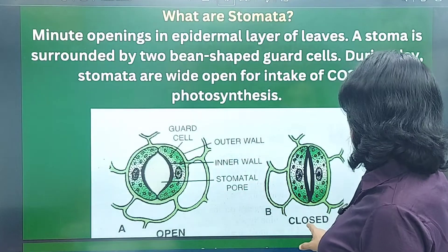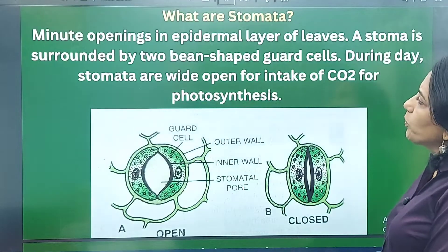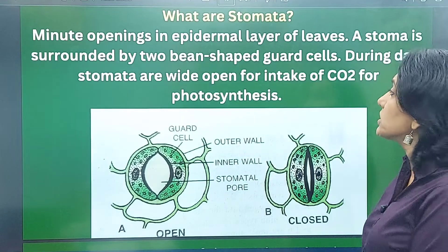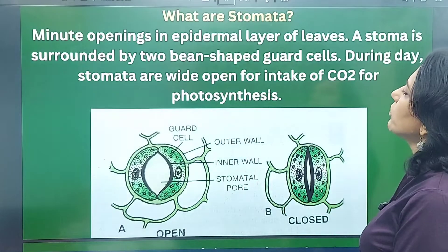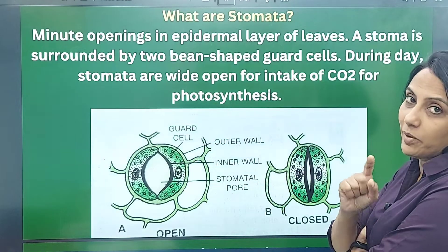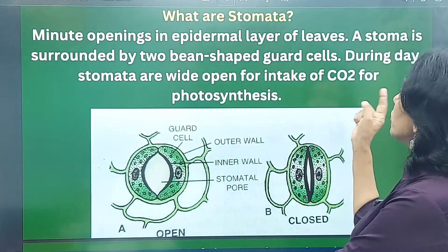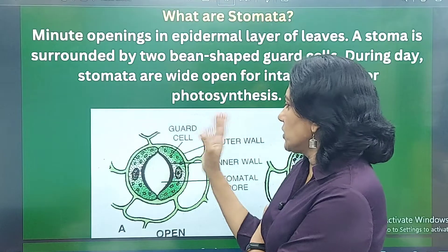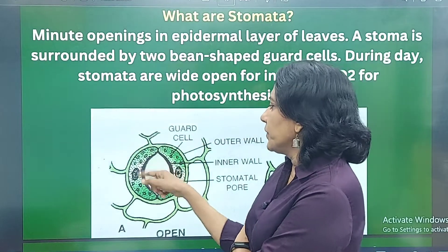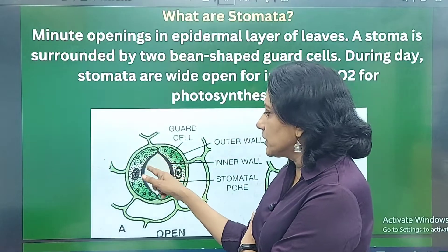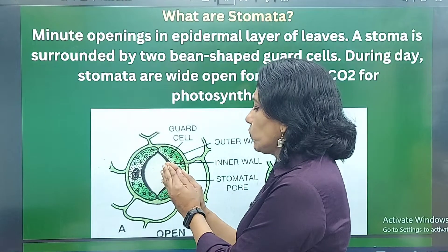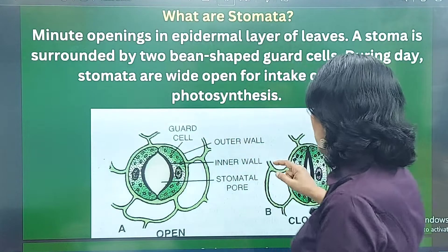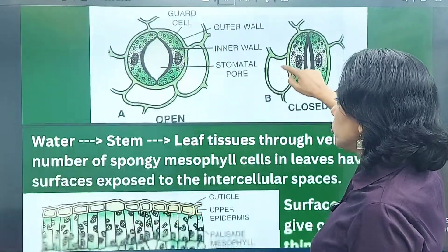So the stomata is open during the day and closed at night. The stomata are minute openings in the epidermal layer of the leaves, surrounded by two bean-shaped guard cells. During the day, stomata are wide open for intake of carbon dioxide for photosynthesis. The guard cells are thicker on the inside, so when they expand, this side opens up more and the stoma opens.